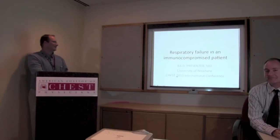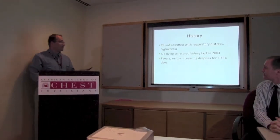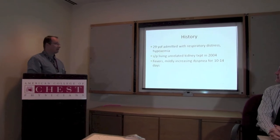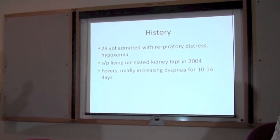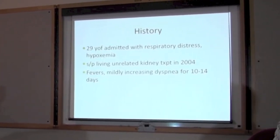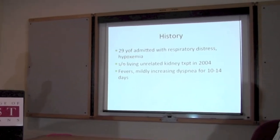Thank you. I'm going to start off with a little history if that's okay with everybody. This is a 29-year-old female admitted with respiratory distress and hypoxemia. She's status post living unrelated kidney transplant in 2004. First things first: don't use the laser pointer to point out every word on the slide and don't simply read the slides. Try to give some information that's not up there — everybody back here can read.